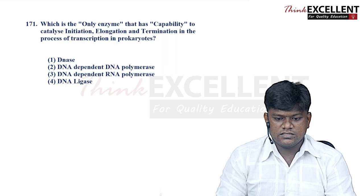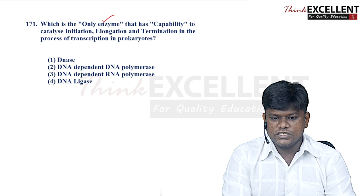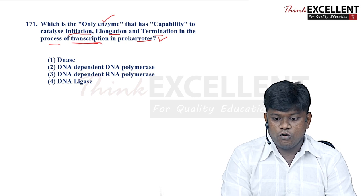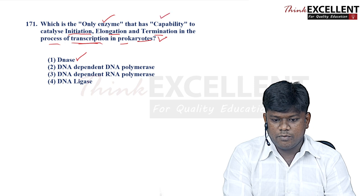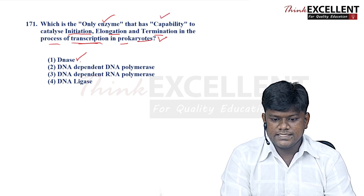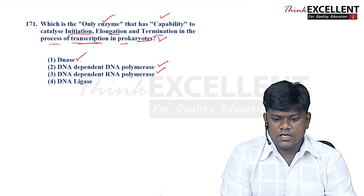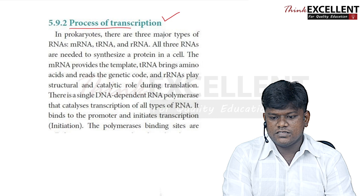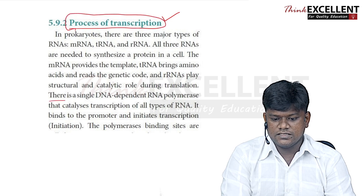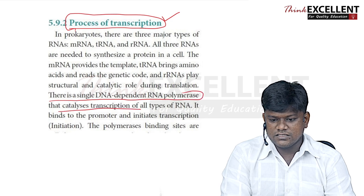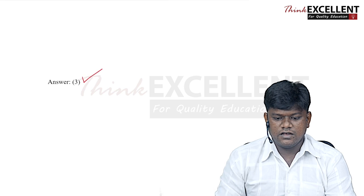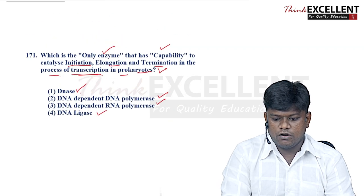Question 171: which is the only enzyme that has the capability to catalyze initiation, elongation, and termination in the process of transcription in prokaryotes? Options are DNA-dependent DNA polymerase, DNA-dependent RNA polymerase, and DNA ligase. In prokaryotes, a single DNA-dependent RNA polymerase catalyzes transcription — this is present in the state board syllabus. Option 3 — DNA-dependent RNA polymerase — is the right answer.